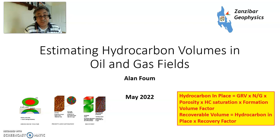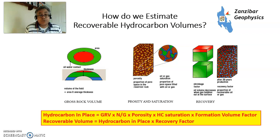Hydrocarbon volumes are estimated using the volumetric equation, which is: hydrocarbon in place equals the gross rock volume multiplied by the net-to-gross ratio, multiplied by the porosity, multiplied by the hydrocarbon saturation, multiplied by a formation volume factor. I'll explain what each of these terms are.